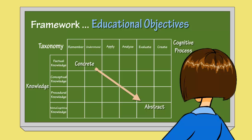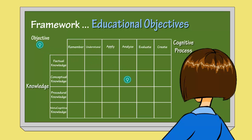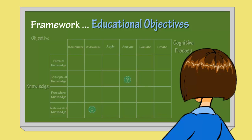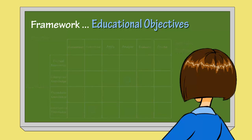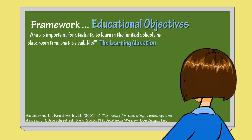So the table looks pretty straightforward, but how does it work? How can Ms. Williams and I use the table? Anderson and others suggest that by placing objectives into the appropriate place in the table, teachers may get some help in answering what are considered four important questions. Anderson and others posit that teachers always consider what is important for students to learn in the limited school and classroom time that is available. This can be thought of as the learning question. Use of the taxonomy table can help by putting objectives into a common language which can provide perspective.